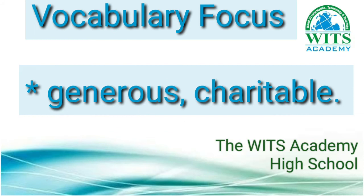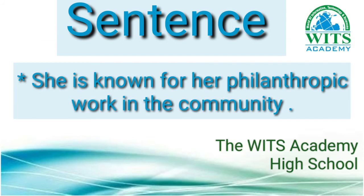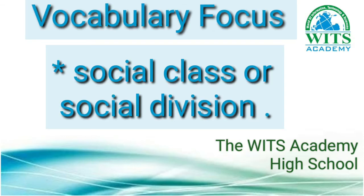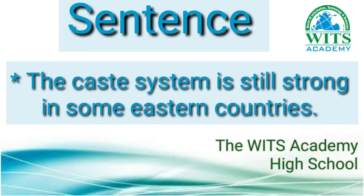Word number four is philanthropic. The meaning is generous or charitable. The sentence is: she is known for her philanthropic work in the community. Word number five is caste. The meaning is social class or social division. The sentence is: the caste system is still strong in some eastern countries.